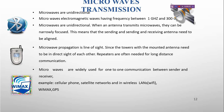When an antenna transmits microwaves, they can be narrowly focused. This means the sending and receiving antennas need to be aligned. Microwave propagation is line-of-sight — the antennas must be in a straight line. Since the antennas need to be in direct sight of each other, repeaters are often needed for long-distance communication. Microwaves are widely used for one-to-one communication, for example in cellular phones, satellite networks, and wireless networks.